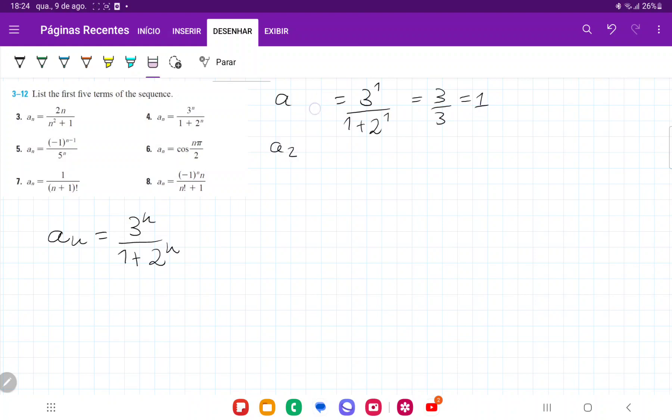a₂ is equal to 3 to the power of 2 over 1 plus 2 to the power of 2, which gives us 9 over 5.